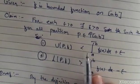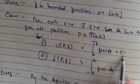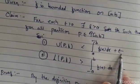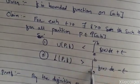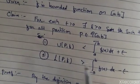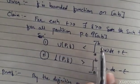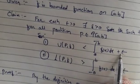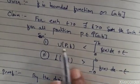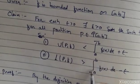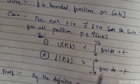The first condition is: U(P, f) is less than the upper Riemann integral from a to b plus epsilon. The second condition is: the lower Riemann sum is greater than the lower Riemann integral minus epsilon. So we have to show that the upper Riemann sum lies within the upper Riemann integral plus epsilon, and the lower Riemann sum lies within the lower Riemann integral minus epsilon.